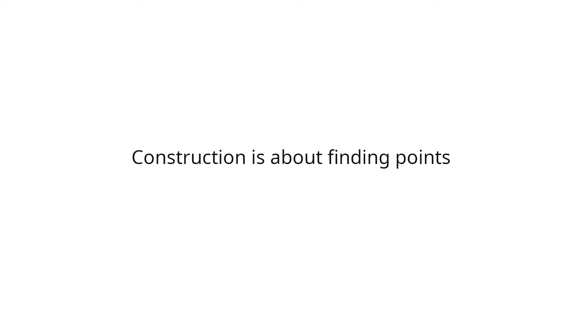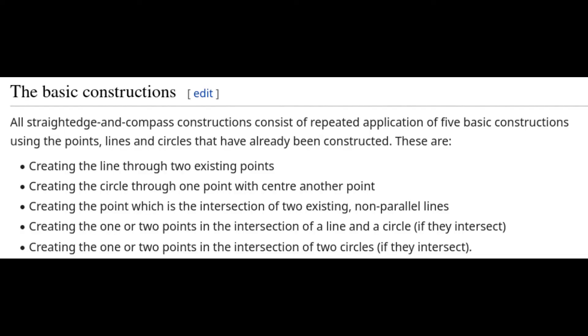All the points that you can construct with a compass and a ruler, you can construct with a ruler while only using the compass once. To show that we can construct all points by this method, we have to show that we can do the five basic constructions, since any construction is just a sequence of these.